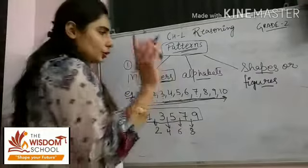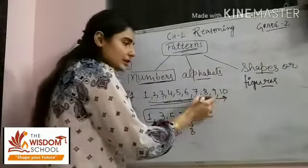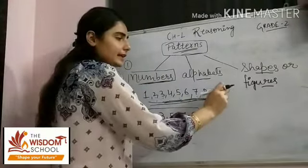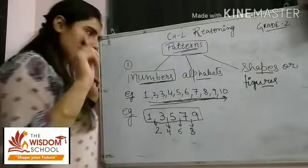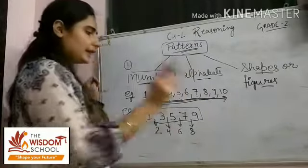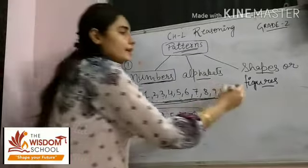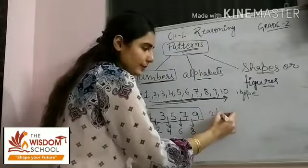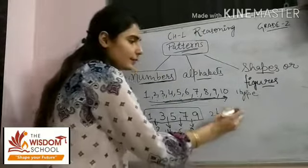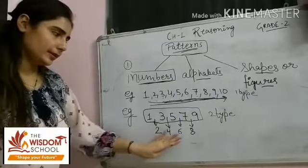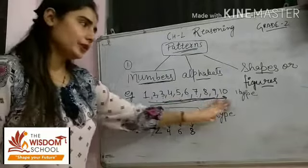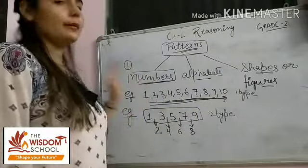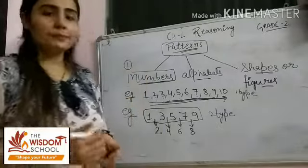So I hope students this concept of pattern in number series is clear to you. Yahan pe humne 2 types ke patterns dekhe hain numbers mein. Ek hoga jisme humne straight away 1, 2, 3, 4, 5, 6, 7, 8, 9, 10 tak counting likhi hai — yeh first type ka pattern ho gaya. Next mein humne 1-1 skip karke likha hai — toh yeh second type ka pattern ho gaya, because yahan pe 1-1 number skipped hai aur yahan pe continue humne counting likhi hai. Toh yeh two types of patterns humne numbers ke andar aaj learn kiye hain.